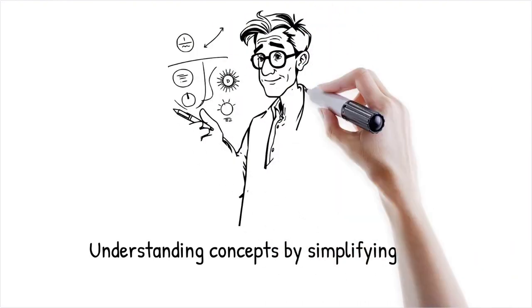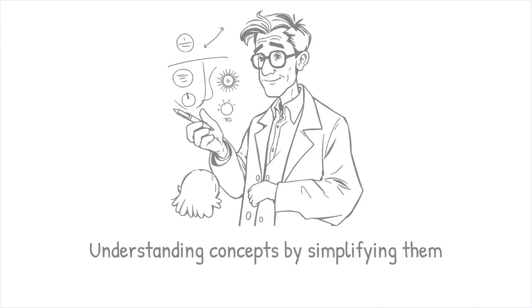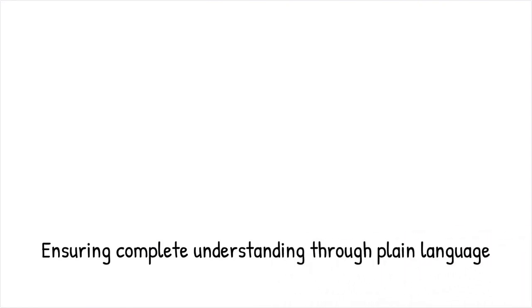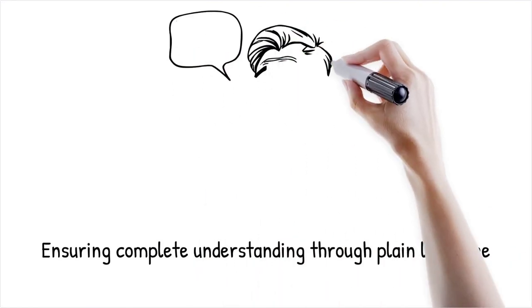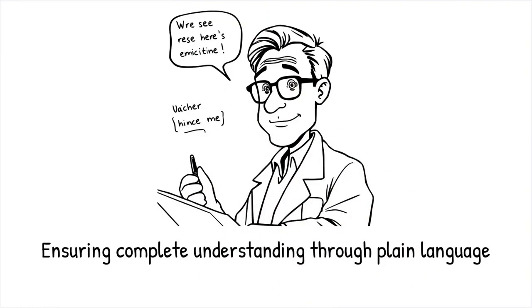Feynman developed a learning method where he would teach complex concepts in the simplest terms possible. This required breaking down topics into clear, concise explanations, ensuring no gaps in understanding, and removing unnecessary complexity. If something couldn't be explained in plain language, it meant the concept wasn't fully understood. This technique is widely used by scientists, educators, and students to deepen comprehension.